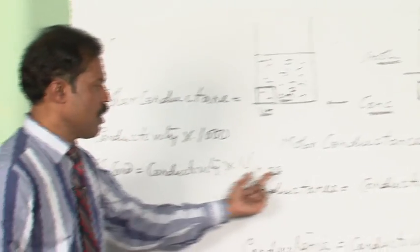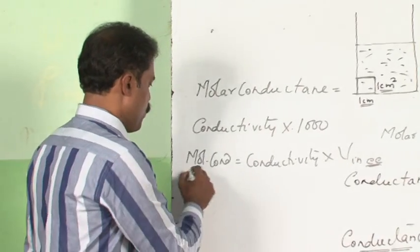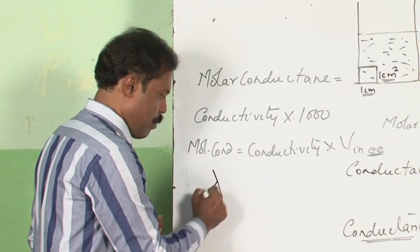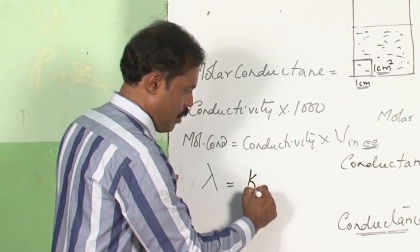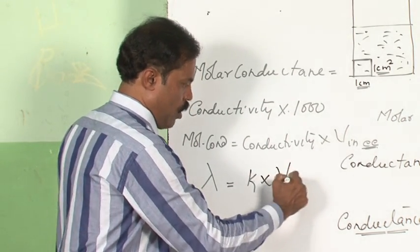So this volume has to be taken in cc always, which means molar conductance, represented with lambda, is equal to conductivity, represented with kappa, into volume in cc.